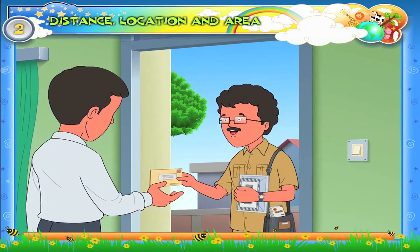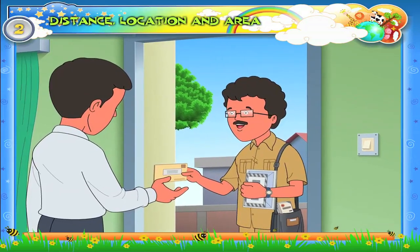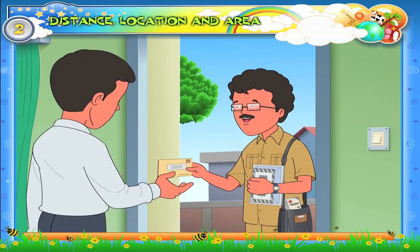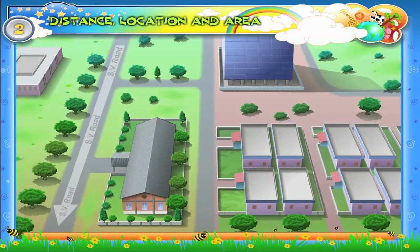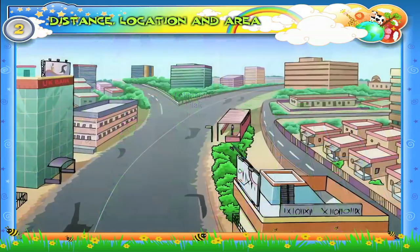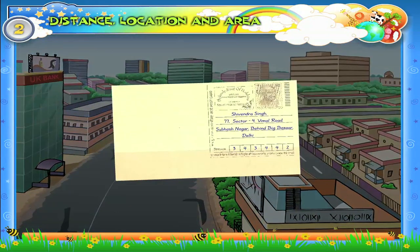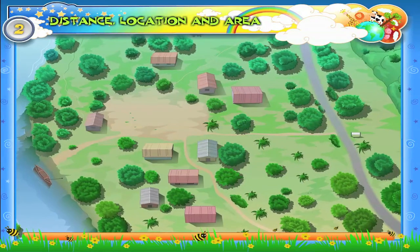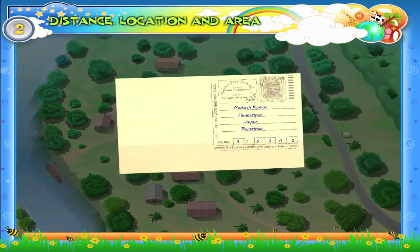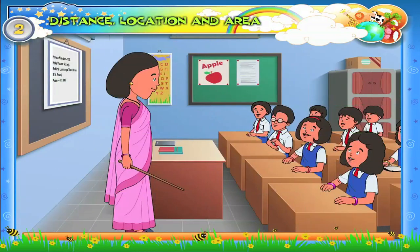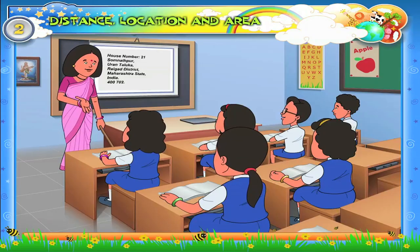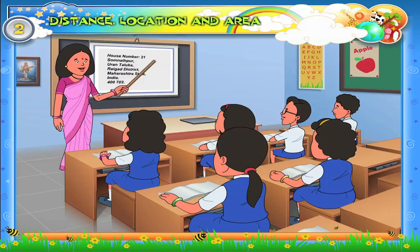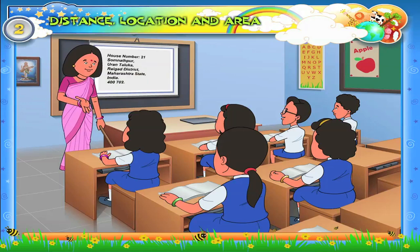For example, the postman delivers hundreds of letters. Do you know how he is able to distribute all the letters correctly? He does this with the help of the address. We use the name of the road or the lane and other important landmarks to say where our house or a place is located. A person living in a big city has to mention many things in his address. But a person living in a village need not mention many things — why? Because a village is small.